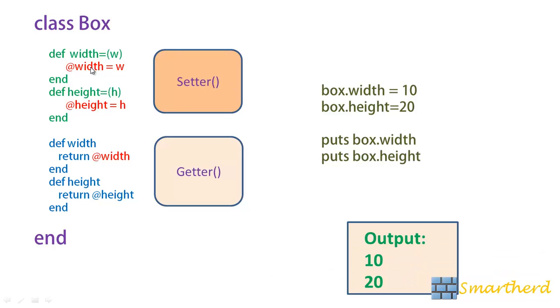Now here you can notice the instance variable width, the name of instance variable is similar to the setter function width and also the instance variable width is similar to the name of the getter function width. There is no harm in that guys because getter and setter are user defined methods. We can name it as set width,